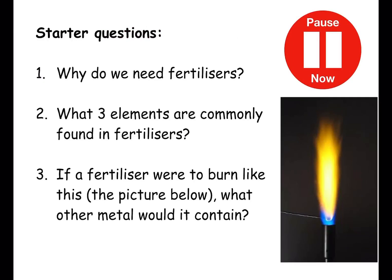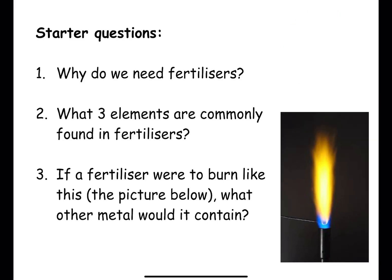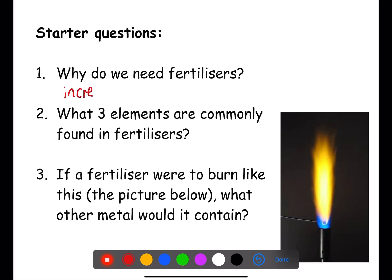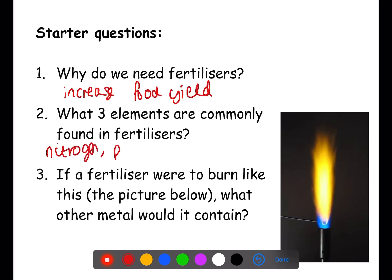Why do we need fertilizers? What three elements are commonly found in fertilizers? And if a fertilizer were to burn like the picture shown, what other metal would it contain? We need fertilizers to increase food yield because we have an increasing human population. The three elements commonly found in fertilizers are nitrogen, potassium, and phosphorus. And if a fertilizer were to burn like that picture, it would contain sodium, as it's burning with an orange-yellow flame.